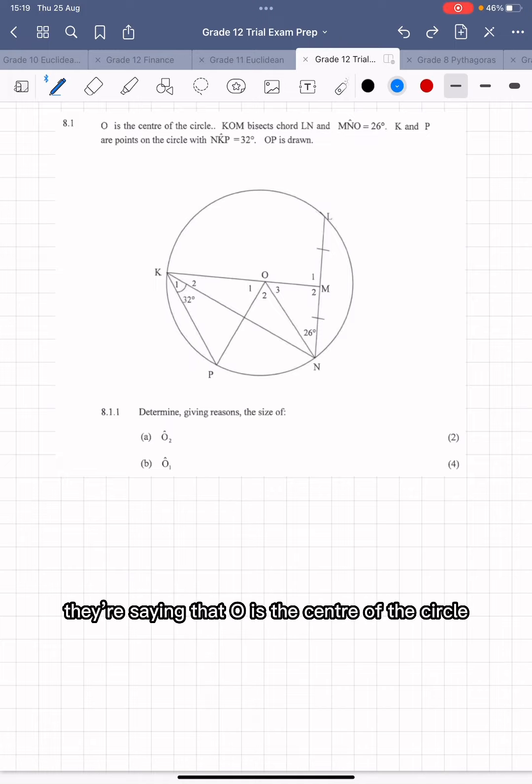Question 8.1, they're saying that O is the center of the circle. Line KOM, which is going through the center, bisects chord LN.